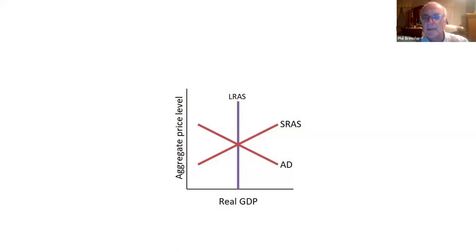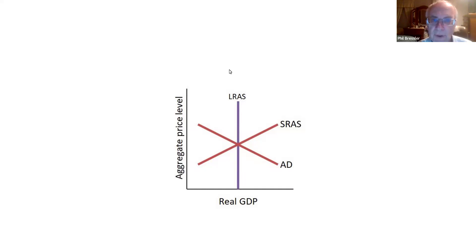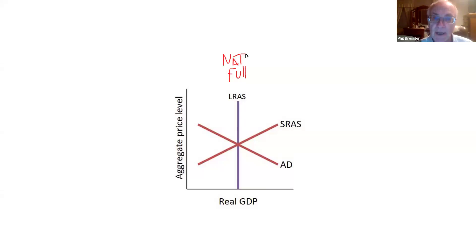I'm going to start out with the LRAS, SRAS, AD. This is at equilibrium. The LRAS is full employment, natural rate of unemployment — we have frictional and structural unemployment — and potential output. That's the LRAS line.